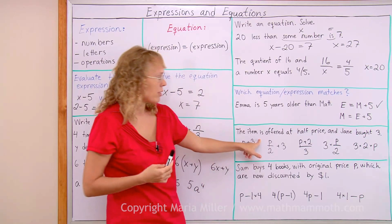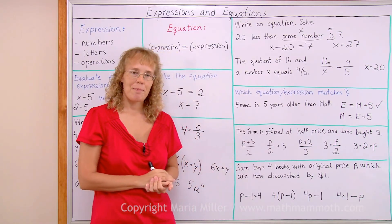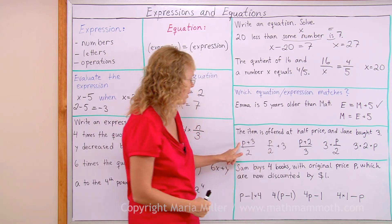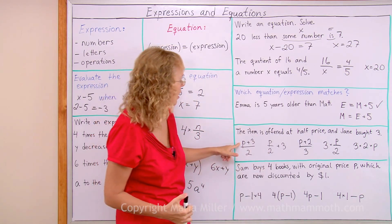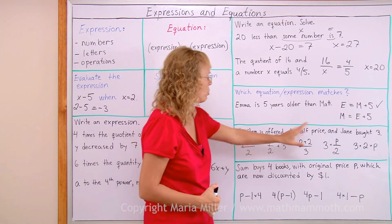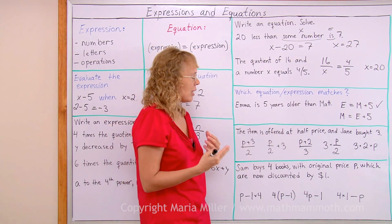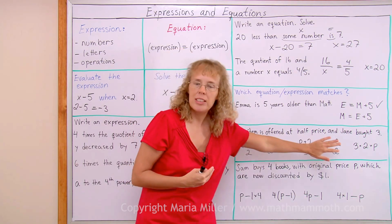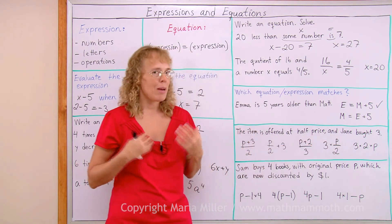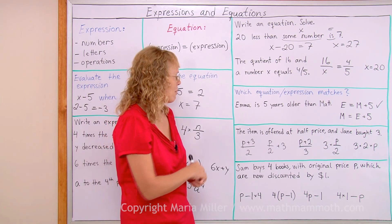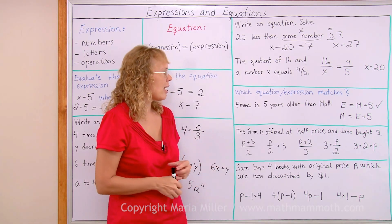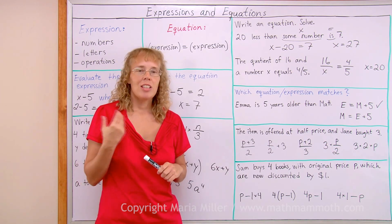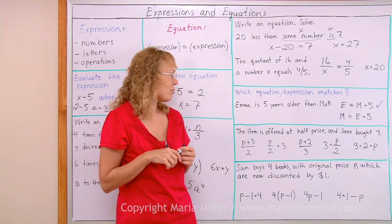The item is offered at half price and Jane bought three. Okay, there's all kinds of expressions here now with p, p meaning the price of the item, and then threes and twos everywhere. Think, like, how would you calculate anything in this situation if you didn't have these expressions? If you just were doing the math in your head and somebody said, oh, this item is offered at half price and Jane bought three.